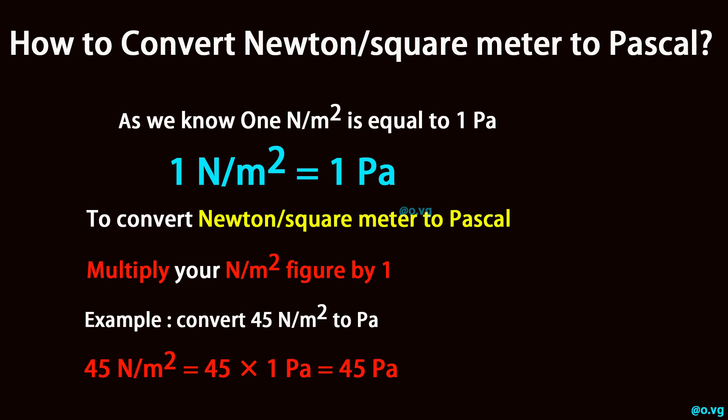Convert 45 newton per square meter to pascal. 45 newton per square meter is equal to 45 times 1, which equals 45 pascal.